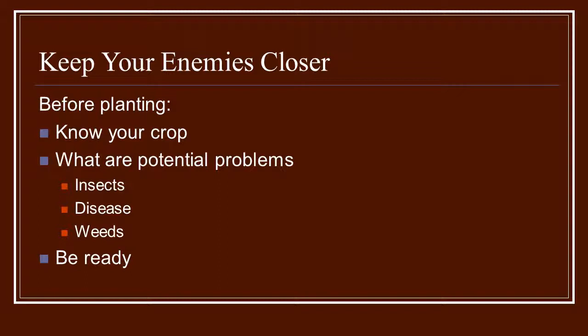Before planting, you want to know what likes the crop you're going to be planting. Be very familiar with the insects that like to eat it and the weeds that have problems with it. Know those potential problems before you even plant your crop, because for some things it can be almost overwhelming. You may want to choose the most resistant variety — one that is resistant to a lot of diseases or insects. Nothing is resistant to weeds, that's for sure. So you want to be ready before you even put that first crop in the ground.